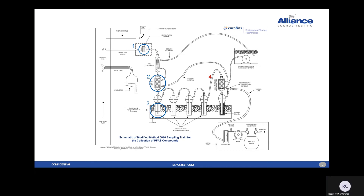Here's what the sample train looks like. You've got the stack, a pitot tube that gives your differential pressure reading and velocity, and the PFAS sample train itself. There's a sample nozzle, probe, and filter — that's fraction one. The gas is cooled in the condenser, then it enters the first XAD trap — that's sample fraction two. Then it goes into the impingers with the methanol solution — that's three. The backup trap is four. All of this is controlled by a metering console with a pump and dry gas meter.